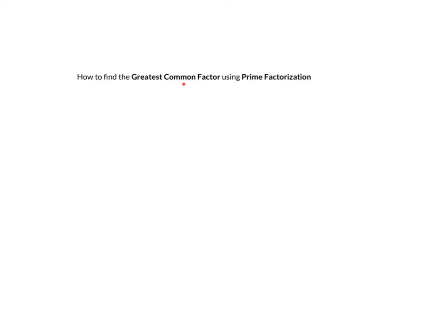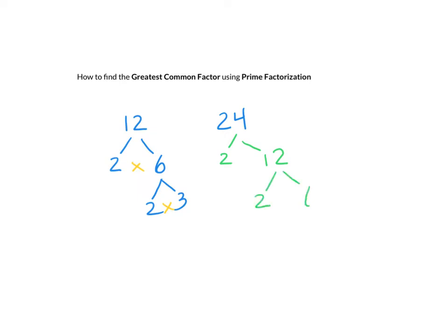Now we're going to review how to find the greatest common factor using prime factorization. Let's find the greatest common factor of 12 and 24. We just did 12 — it's 2 times 6, or 3 times 4, and your results end up the same, giving 2 times 3. Now let's make our factor tree for 24: 2 times 12 is 24, 2 is prime so we leave it, 2 times 6 equals 12, and 6 is not prime, so we factor it: 2 times 3 equals 6.